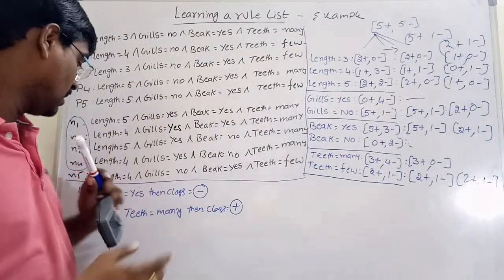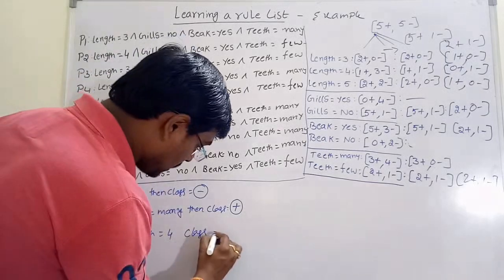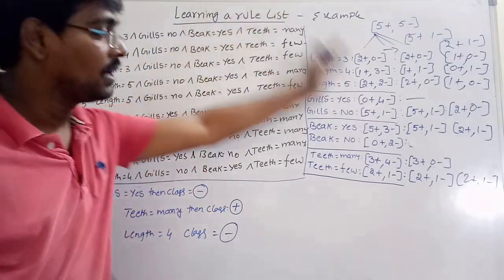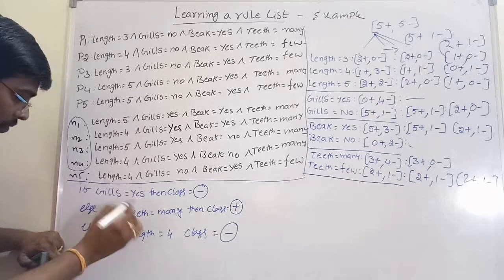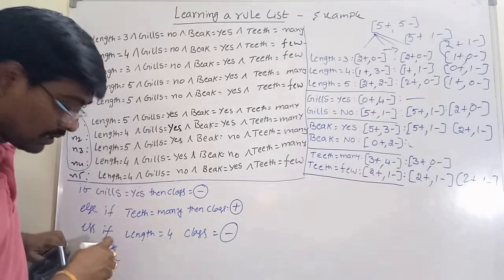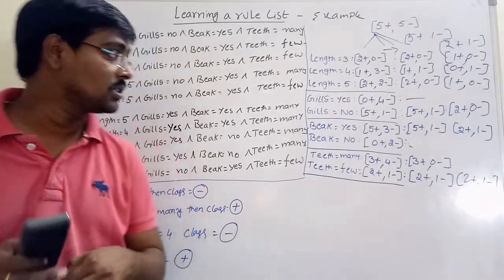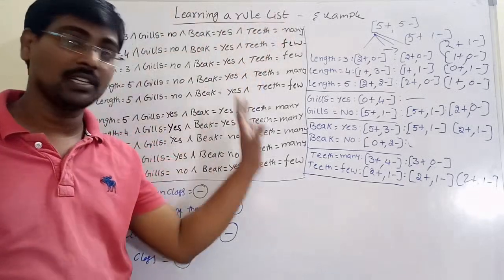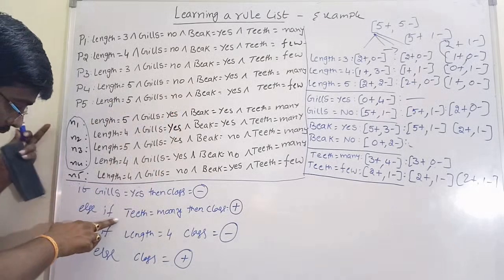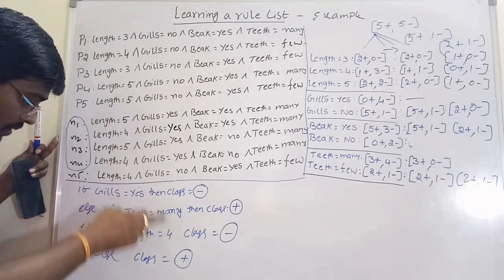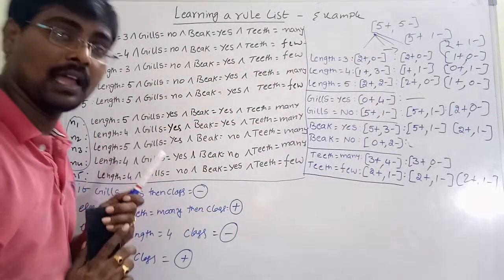Continuing: if gills equal to yes — that rule is already defined. Next, if length is equal to 4, the class is a minus class — some terms are eliminated. We write rules using if / else-if / else structure. Length equal to 4 means negative; each rule reduces the instance set, and the final else case gives a positive class. Step by step we add a rule and eliminate statements.